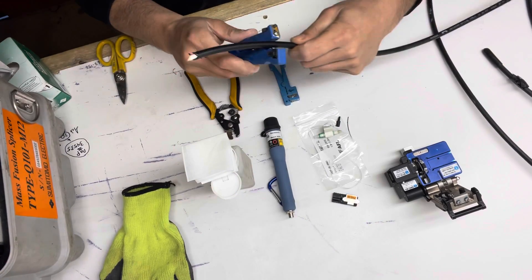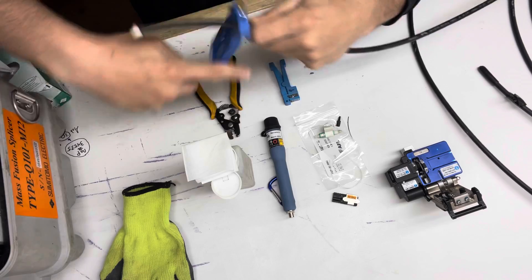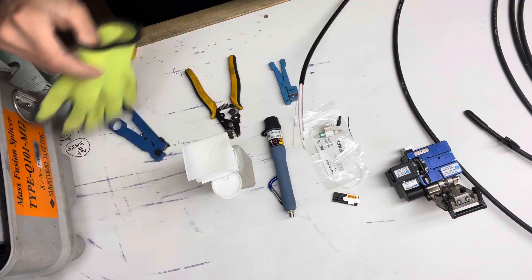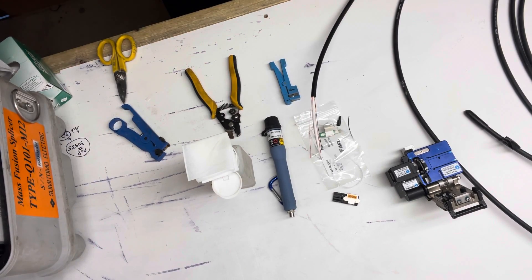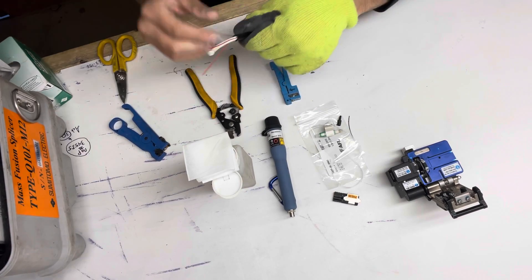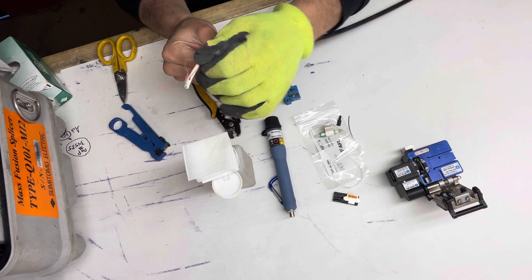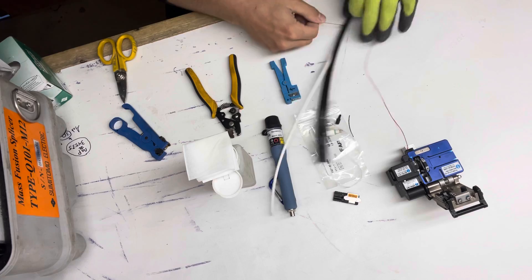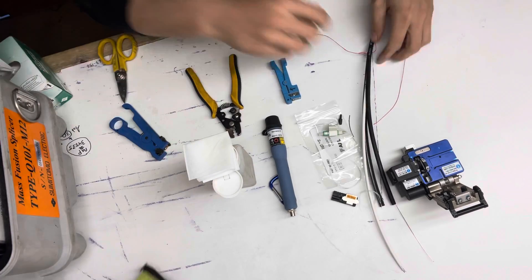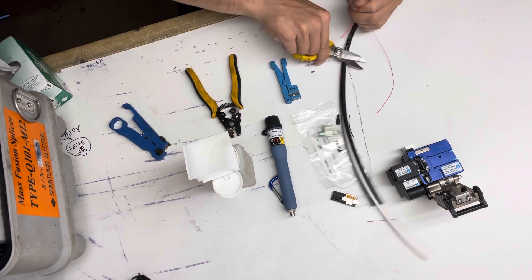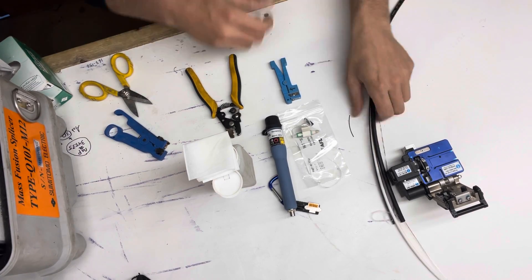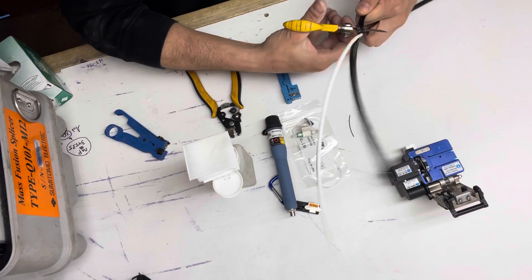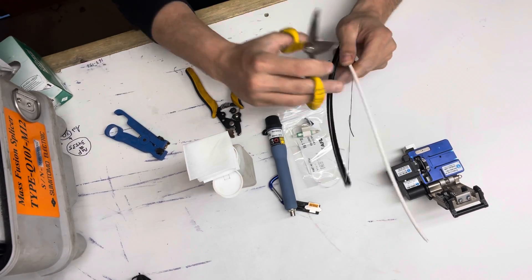You're going to want to ring cut your drop line. Pull your ripcords down. Remove the other jackets.